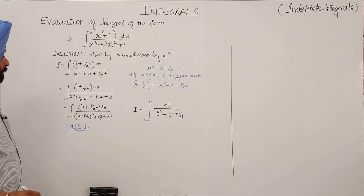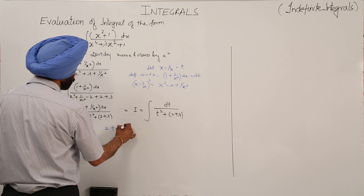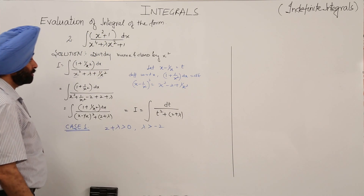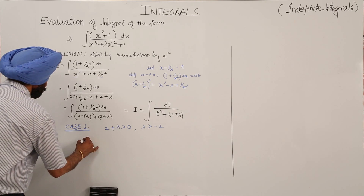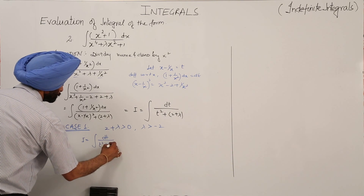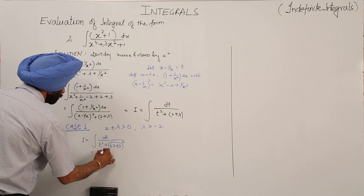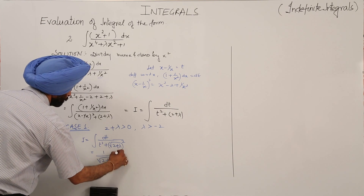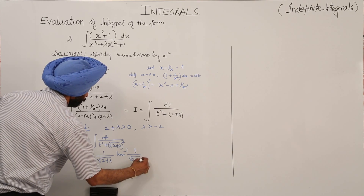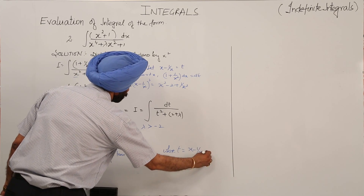Case 1: 2 + λ > 0, or λ > -2. We have the integration of dt upon t² + (√(2+λ))². This becomes (1/√(2+λ)) · tan⁻¹(t/√(2+λ)) + C, where t = x - 1/x.